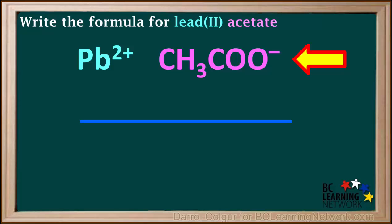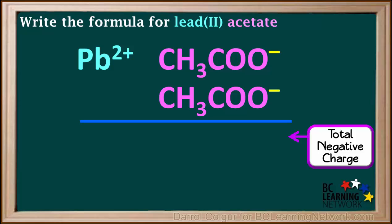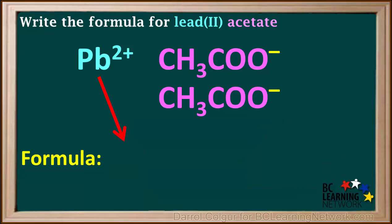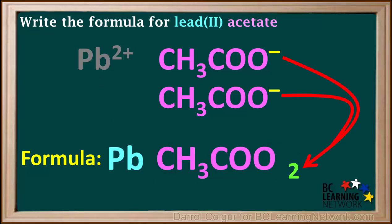So we add one more acetate ion, and the total negative charge is now -2. These charges are now balanced. They do add up to zero. So the formula has one Pb and two acetate ions.